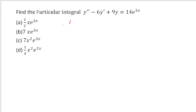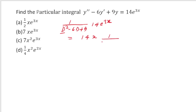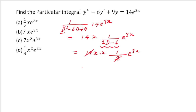Third question: 1/(D²-6D+9) operating on 14e^(3x). Putting D = 3: 9-18+9 = 0, failure. Multiply by x and differentiate with respect to D: get 1/(2D-6)·e^(3x). Substituting D = 3: 2·3-6 = 0, still zero. Repeat: multiply by x again and differentiate, getting 1/2 · e^(3x). So 14 × (x²/2) · e^(3x) = 7x²e^(3x). Option c is correct.